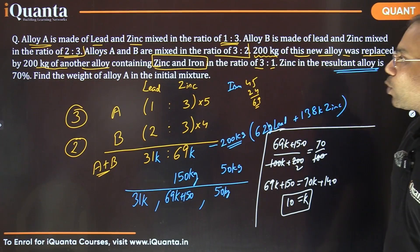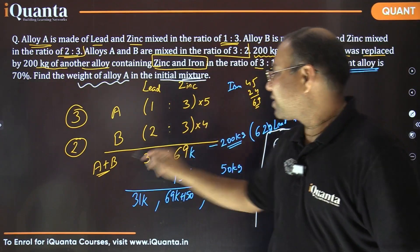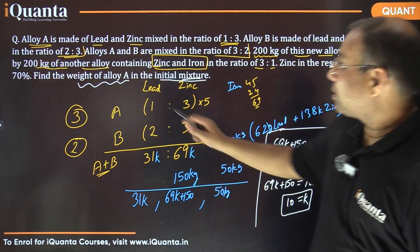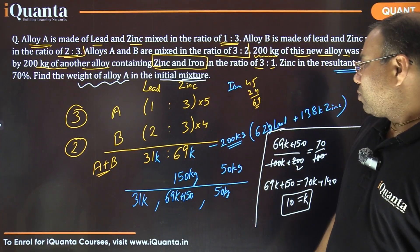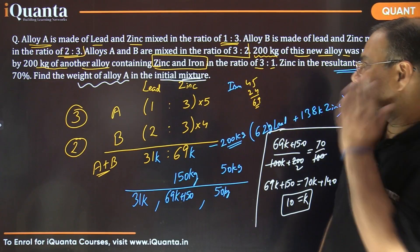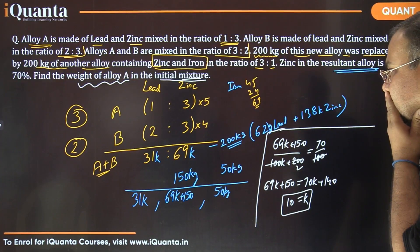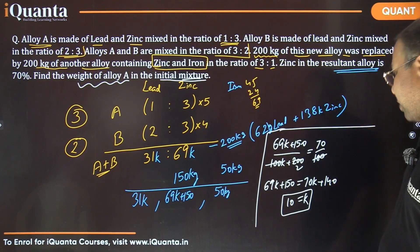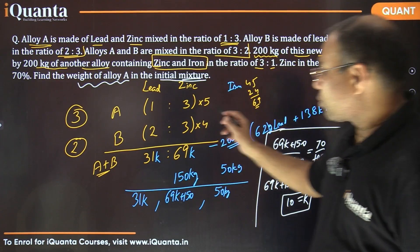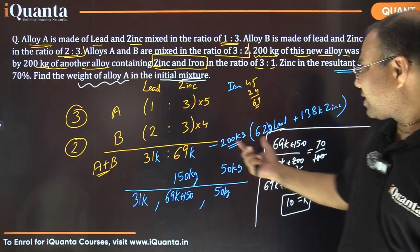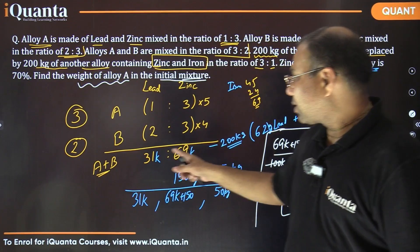With k equals 10, we get exact values. The question asks for the weight of alloy A in the initial mixture. The remaining quantities are 31 times 10 equals 310 kg of lead and 69 times 10 equals 690 kg of zinc. Plus the 200 kg taken out, the initial total mixture was 310 plus 690 plus 200 equals 1200 kg.